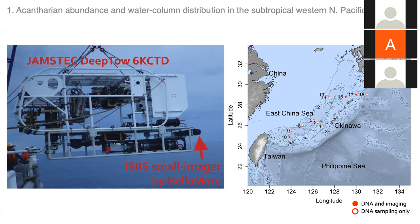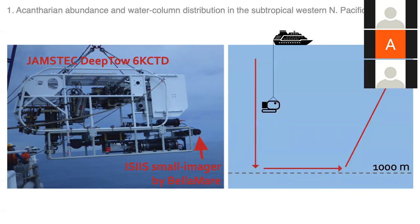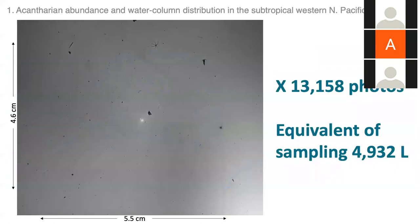We lowered the deep tow system straight down through the water column to 1000 meters, then it was pulled forward and back up to the ship. Because the ISIIS imager is at the back of the frame, we only used images from the downward cast, since forward motion could interfere with water entering the imaging area and make counts non-quantitative. Using just this downcast data, I still had 13,158 photos to look at, equivalent to sampling 4,932 liters of water.